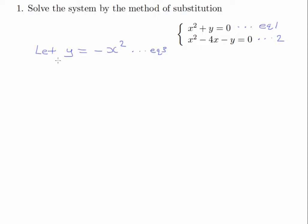And we are going to substitute this into equation 2. So let's substitute equation 3 into equation 2. And that will give us x squared minus 4x minus negative x squared is equal to 0.